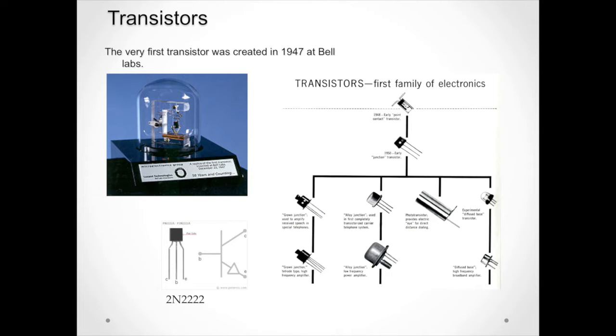So, modern computers and all the components, for example, the logic gates, leading up to multiplexes, demultiplexes, your memory units, all kinds of components within computers, they are made up of millions of billions of transistors at a very nano size. So, the very first transistor was created in 1947 at Bell Labs, and you can see here the transistors, first family of electronics, early point contact transistors and so on.